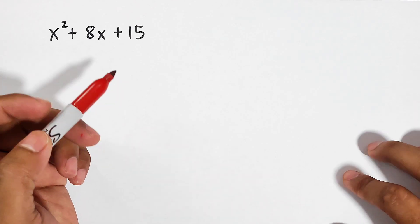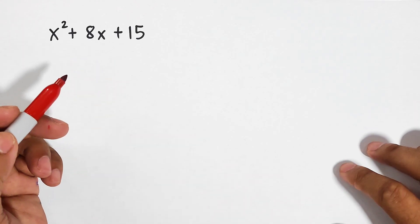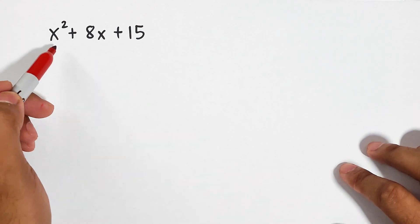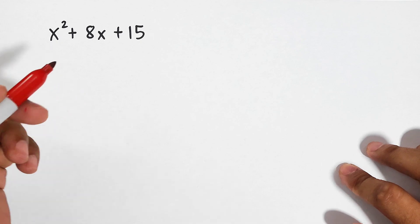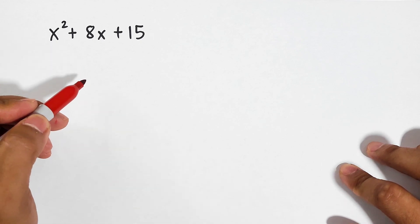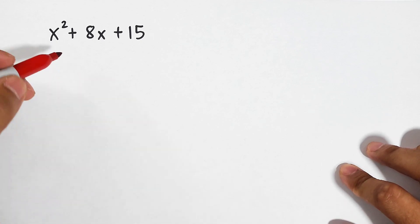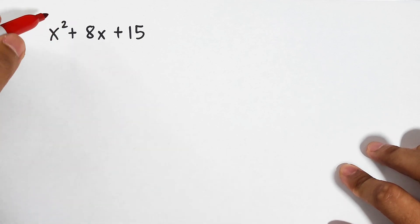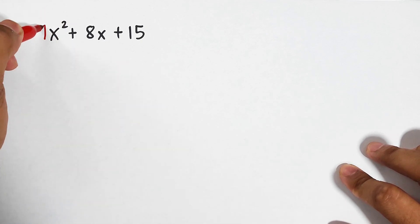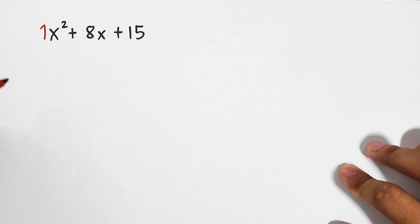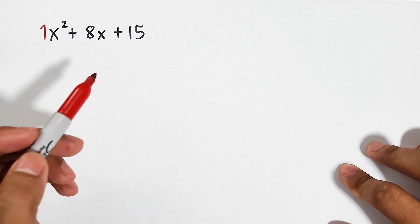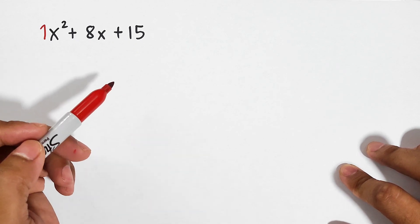Now let's factor out trinomials the easiest way. Let's start with x squared plus 8x plus 15. This is our first example. As you can see, in our first term, the coefficient of x squared is 1, so it is a lot easier for us to factor this out.